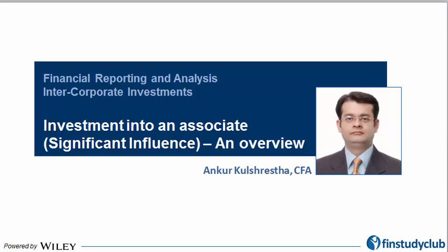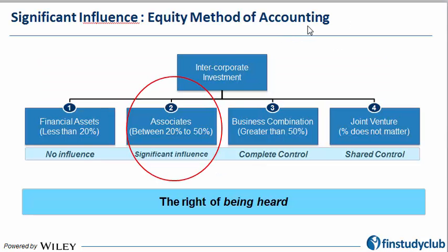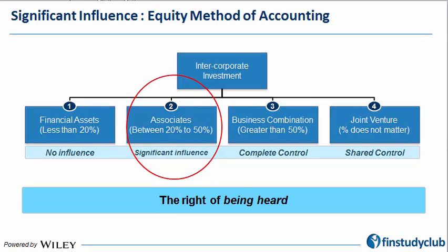Hello friends, this is Ankur from FinStudyClub welcoming all viewers to a very important video series where we are going to talk about the associate and the equity method. To set the context, there could be four possible scenarios when a company C1 makes an investment into another company C2, and those four scenarios are not dependent upon the percentages as much as they are dependent upon the influence or control that the investor gets.